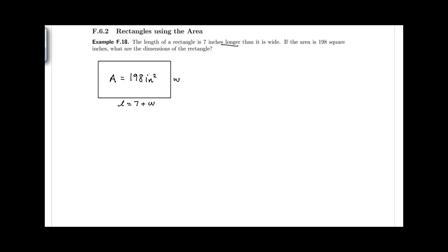So the first thing we should probably write down is the area of a rectangle, which is length times width. If the area of the rectangle is length times width, and we know that the area is 198 square inches, and we know the length is 7 plus the width, I can go ahead and put that right in there for L, and then leaving the width as it is.